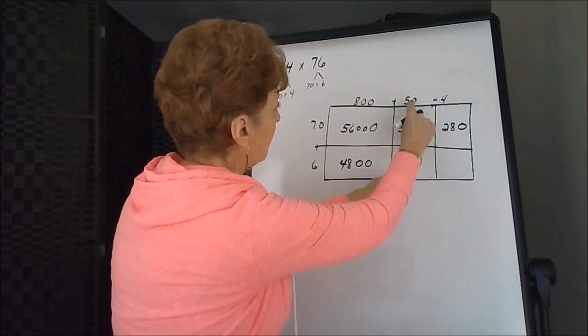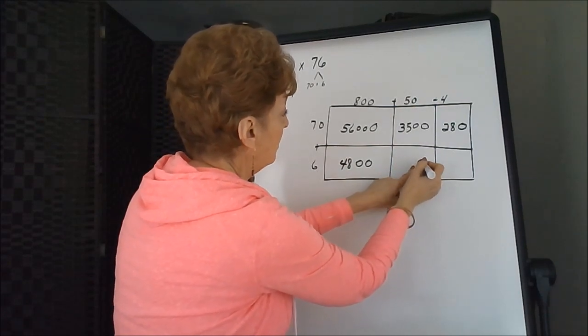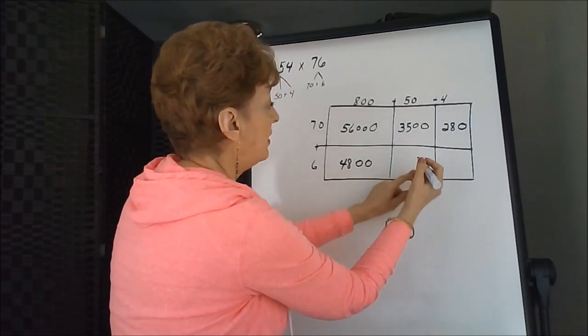The next column, we've got a zero in the 50. Now we can just multiply 6 times 5 is 30.